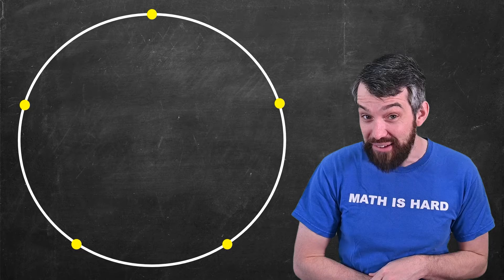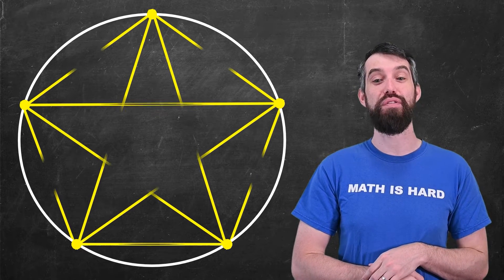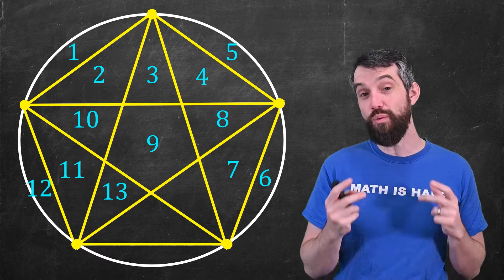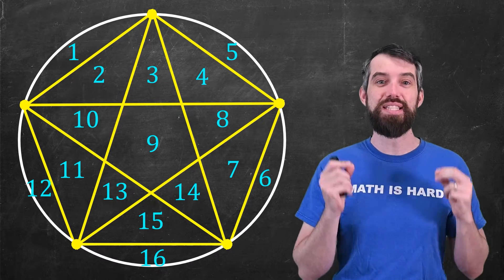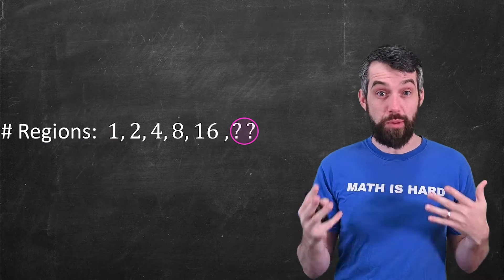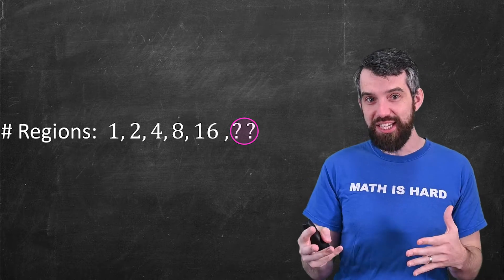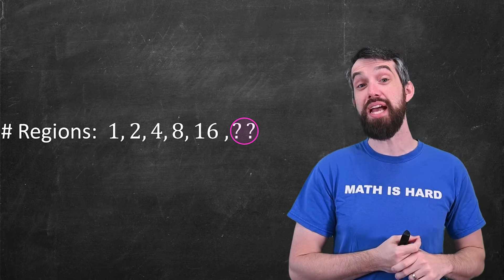Let's keep on going with the pattern. Five dots now. Connect all of those dots up. Count all the different regions that are formed, and what do we get? We get 16 regions. So what's our pattern thus far? We started with one region, two regions, four regions, eight regions, 16 regions. Can you guess what comes next?